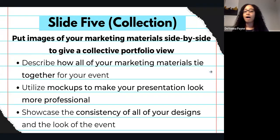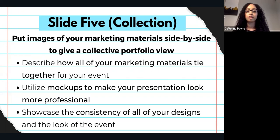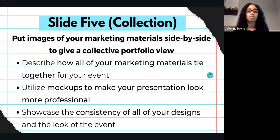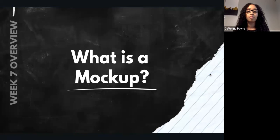Slide five is putting everything together. You're going to place images of your marketing materials side by side to give a collective portfolio view. Describe how all of your marketing materials tie together for your event, utilize mock-ups to make your presentation look more professional, and showcase the consistency of all your designs and the overall look of the event. Before I show you some examples, if you don't know what a mock-up is, we're definitely going to cover it now.